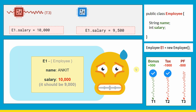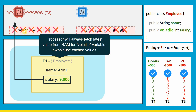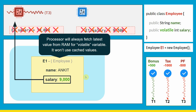To avoid that situation, we have the volatile keyword. When we declare a variable as volatile, the processor will never use the cache — it will always go to RAM, read the latest value, and write the value directly to RAM, bypassing the caching mechanism. So if operations happen sequentially, they will always be correct. The processor will always fetch the latest value from RAM for a volatile variable and will not use the cached value.